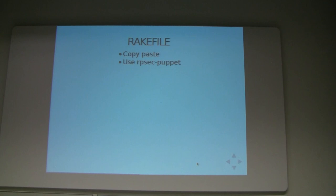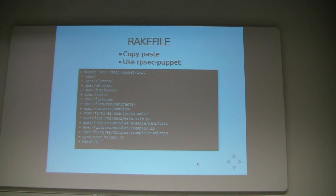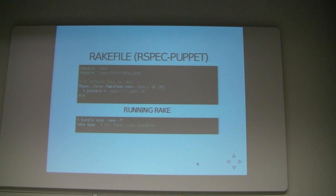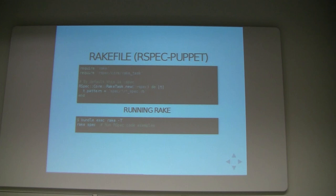Next is the Rakefile, and you have a couple of options. I tend to use the first option — I just copy-paste an existing Rakefile I have. Or you can use RSpec-Puppet, which is a nice tool that comes with the command rspec-puppet init, and that will set up a basic testing structure for your module. Once RSpec-Puppet has generated that Rakefile, we have this basic Rakefile that was generated for us and we can immediately start using Rake. Running bundle exec rake will give us a list of the different tasks that are available.